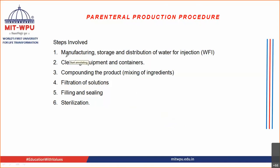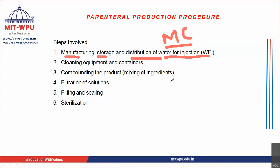The first step is manufacturing and distribution of water for injection. Water for injection is the vehicle used not only for manufacturing, but also for cleaning. So a large amount of water for injection is required. First you manufacture this water for injection, then you store it, and then you use it further.